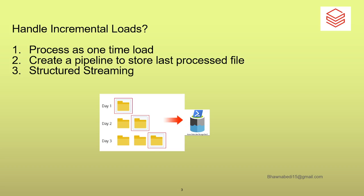The second way is creating an ETL or ELT pipeline where you store information about what file was processed last from the data lake. When a new file arrives, you check which file you processed last time and then process the next file. The third approach was structured streaming, where you use structured streaming directly to do incremental loads. These were the three traditional ways to process incremental loads.